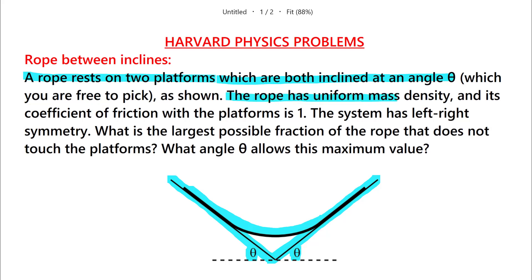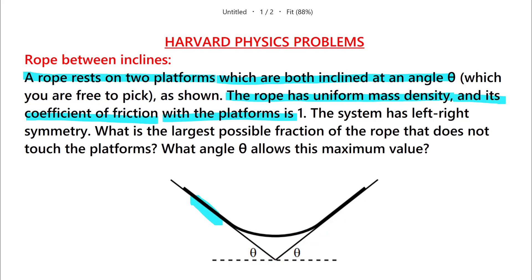The rope has uniform mass density. The coefficient of friction with the platform is 1, so mu equals 1. That is the coefficient of friction between the rope and the surface. And the system has left and right symmetry.